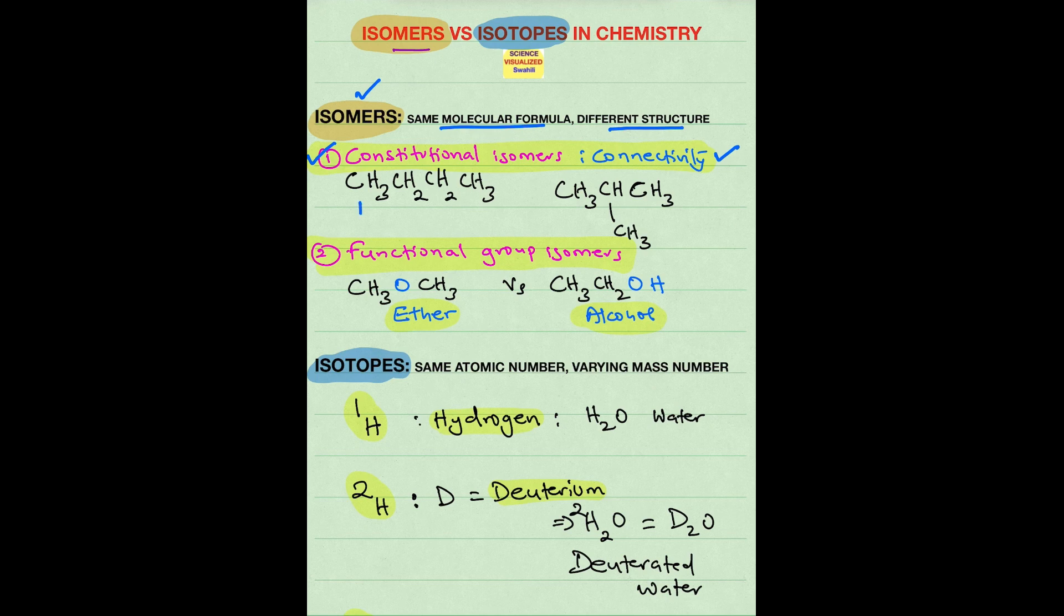For example, here you have carbon number 1, 2, 3, and 4 connected in a linear fashion. And then in this next structure you have 1, 2, 3, and 4 connected in a non-linear fashion, and they all have the same molecular formula, so they have four carbons. So C4H10.